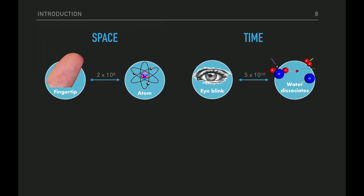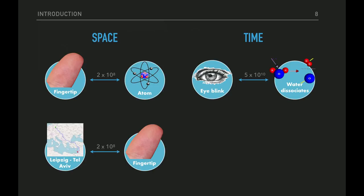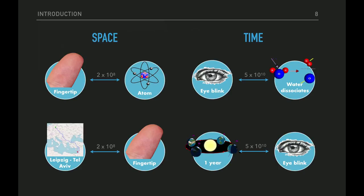Eine Fingerspitze ist verglichen mit einem Atom um einen Faktor von 2×10^8 größer – das ist zum Beispiel das Gleiche wie der Unterschied zwischen dem Weg von hier nach Leipzig nach Tel Aviv verglichen mit einer Fingerspitze. Auf der Zeitskala ist ein Jahr verglichen mit einem Blinzen das Gleiche wie die Zeitskala der Wasserdissoziation. Das zeigt, dass Röntgendiffraktion wirklich an einem völlig anderen Punkt operiert.